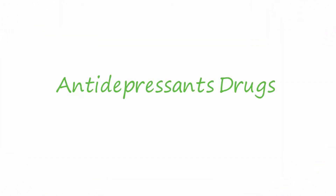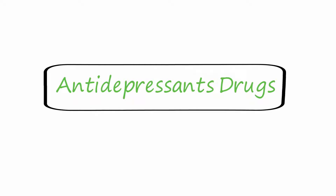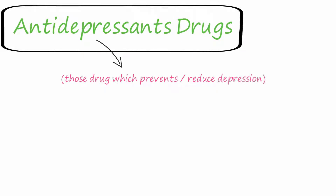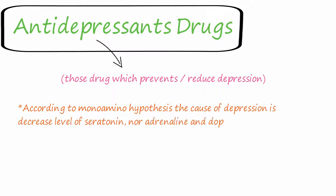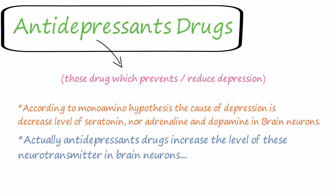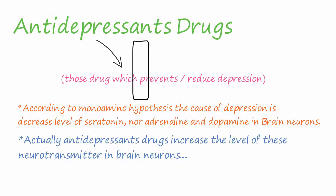Today we will discuss antidepressant drugs. Antidepressant drugs are those drugs which prevent or reduce depression. According to the monoamine hypothesis, the cause of depression is a decreased level of serotonin, noradrenaline, and dopamine in brain neurons. Antidepressant drugs work by increasing the level of these neurotransmitters in brain neurons.